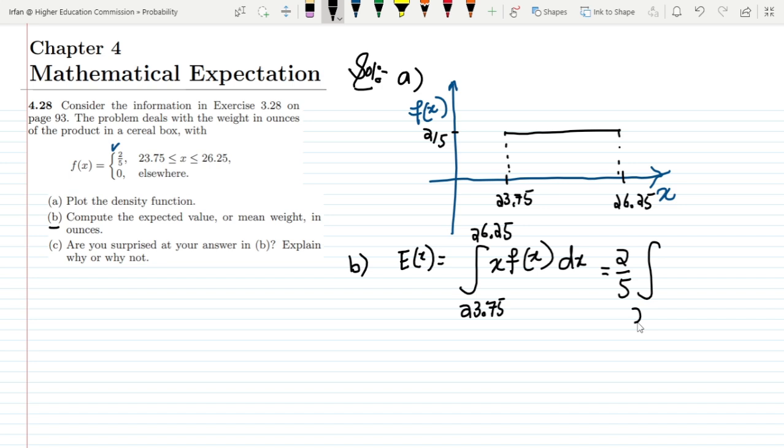Here it will be 23.75 to 26.25 x dx. Or it will become 2/5 multiplied by x square by 2, x square by 2 while the ranges will be 23.75 and 26.25.